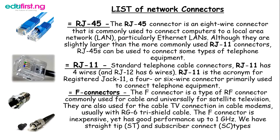List of network connectors: the RJ45 is an 8-wire connector commonly used to connect computers to a local area network. For example, an internet service provider connects your router to your computer using an RJ45 cable. RJ45 connectors are slightly larger than the more commonly used RJ11. The RJ11 has four wires and is used in telephone equipment; RJ12 has six wires. RJ11 stands for Registered Jack 11 — a four-to-six-wire connector formerly used to connect telephone equipment.